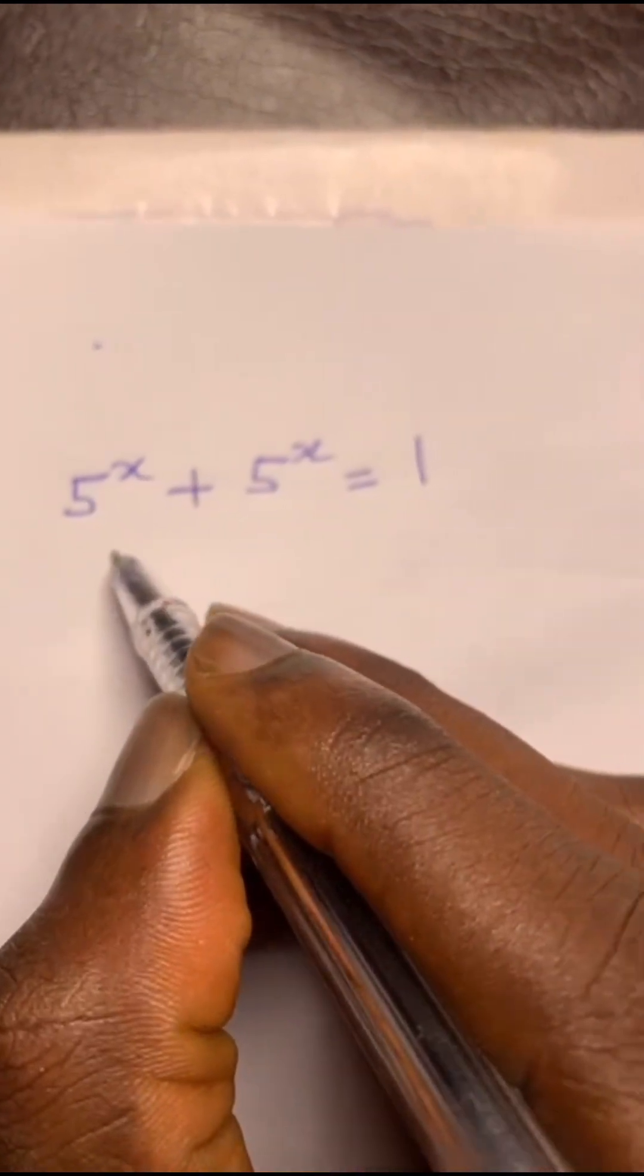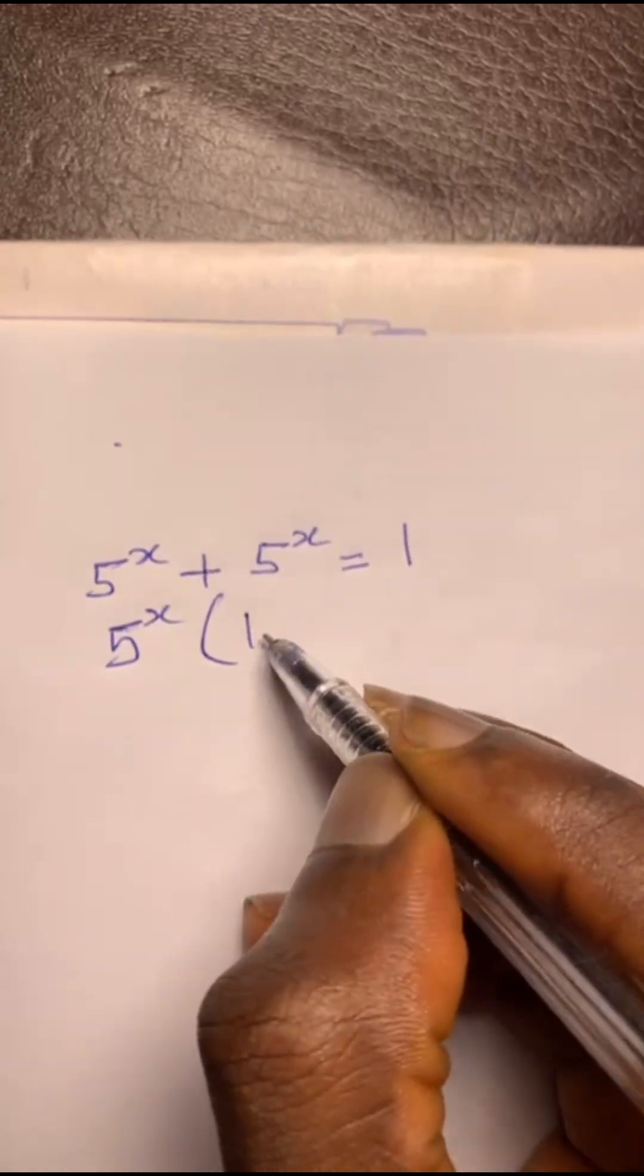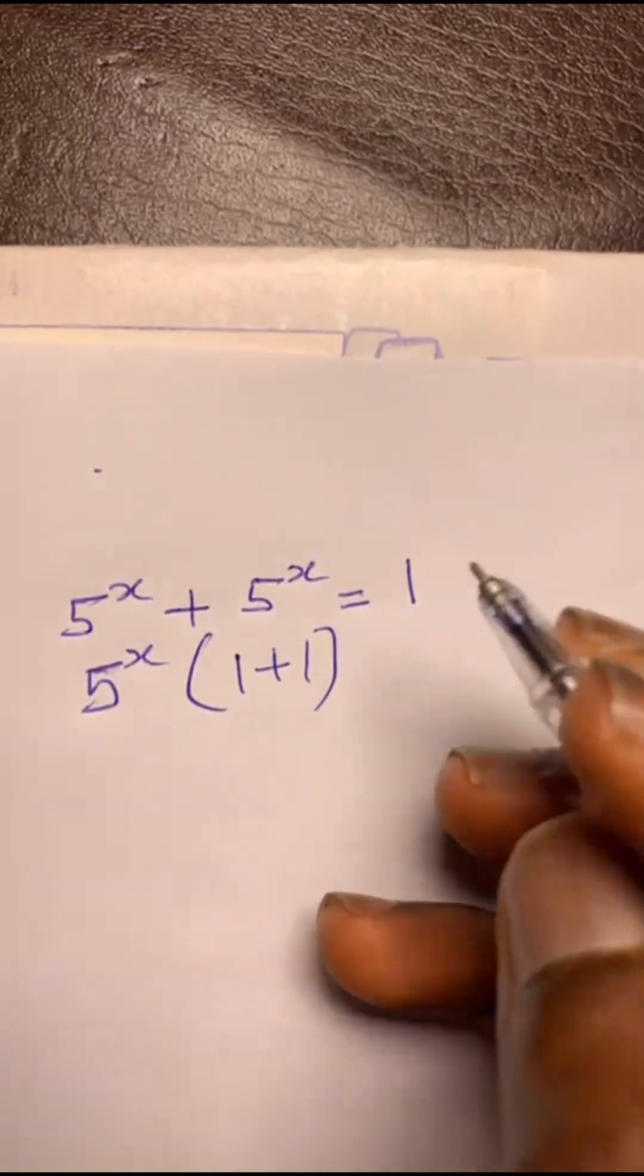So you factor out this. What's common? 5 to the power of x times 1 plus 1. Because if you do this times this, you get this back, this times this, you get this back.